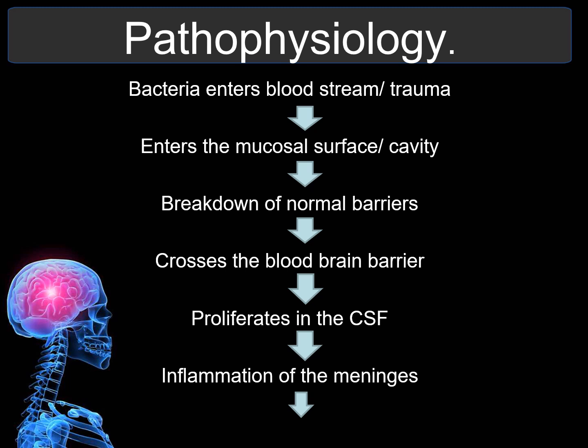The immune system responds to the infection by triggering inflammation of the meninges — the protective membranes around the brain and spinal cord. This inflammation causes classic symptoms like headache, fever, and stiff neck. Increased intracranial pressure results from swelling and fluid accumulation, which can compress the brain and impair its functions, leading to complications like seizure, altered consciousness, or coma.